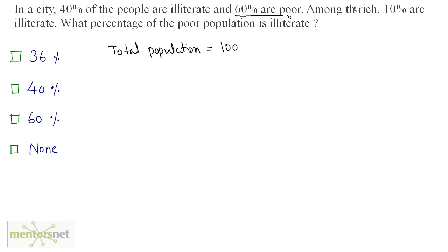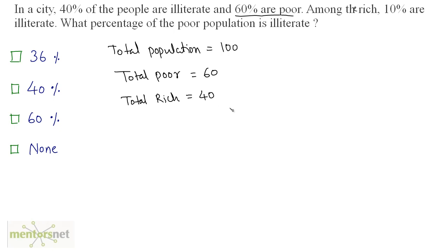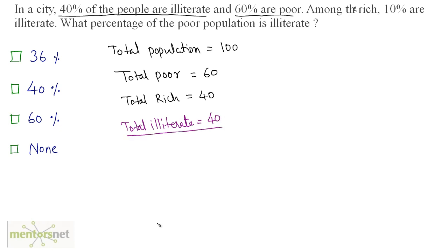It is given that 60% of the city's population is poor, which means total poor population is equal to 60% of 100, which is 60. If out of 100 people 60 are poor, the other 40 are rich. So total rich is equal to 40. Also, it is given that 40% of the people are illiterate — this includes illiterate people of both the poor and rich categories. Total illiterate population is 40% of 100, that is 40.